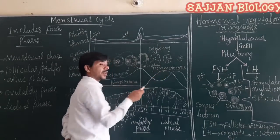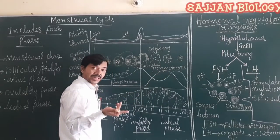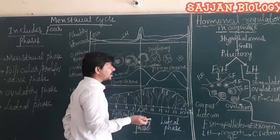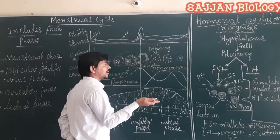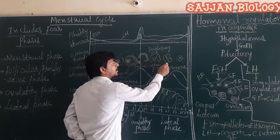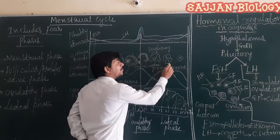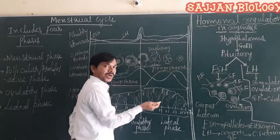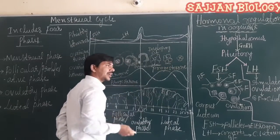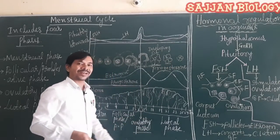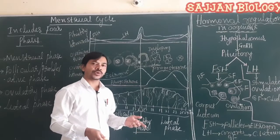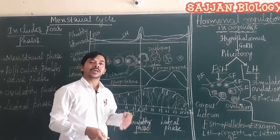If there is no fertilization, the corpus luteum undergoes regression — it converts into the corpus albicans, as described in the textbook. This regression of the corpus luteum reduces its function.